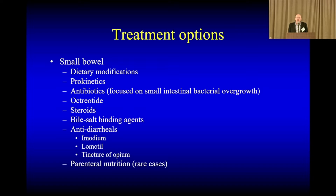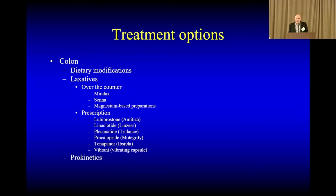In rare cases, we'll look at IV nutrition, but we really try to do everything we can not to. And then finally with the colon, if constipation is a big issue, we have a number of medications out there — five medications that are FDA-approved specifically for constipation. There's also a new mechanical capsule that vibrates, which was recently approved. The idea is that it shakes through and gets things going. It's new enough that we're figuring out where it works, but it has the appeal of not interfering with the other medications.